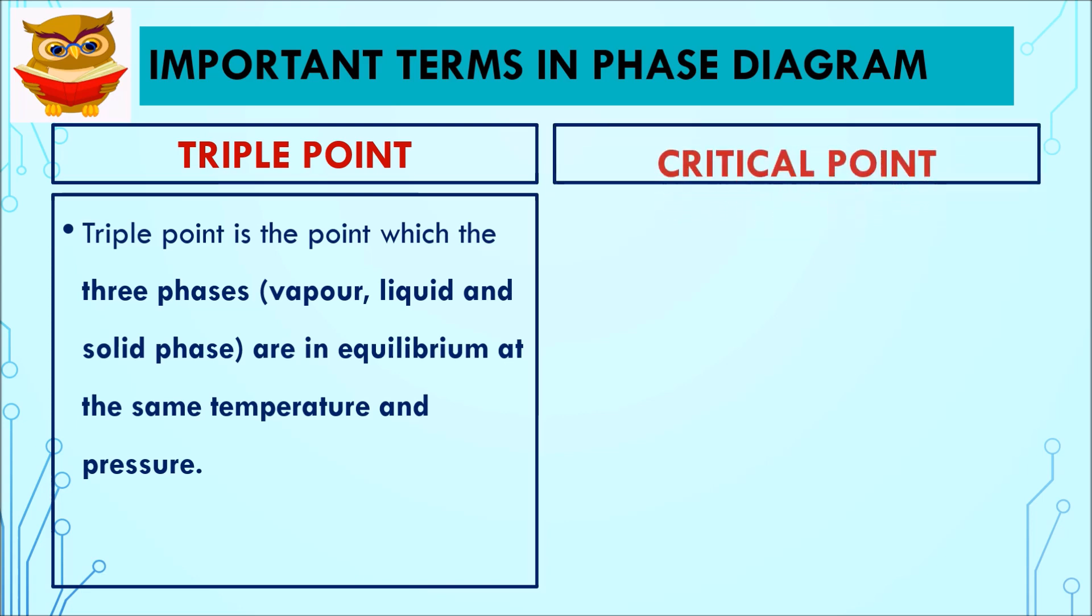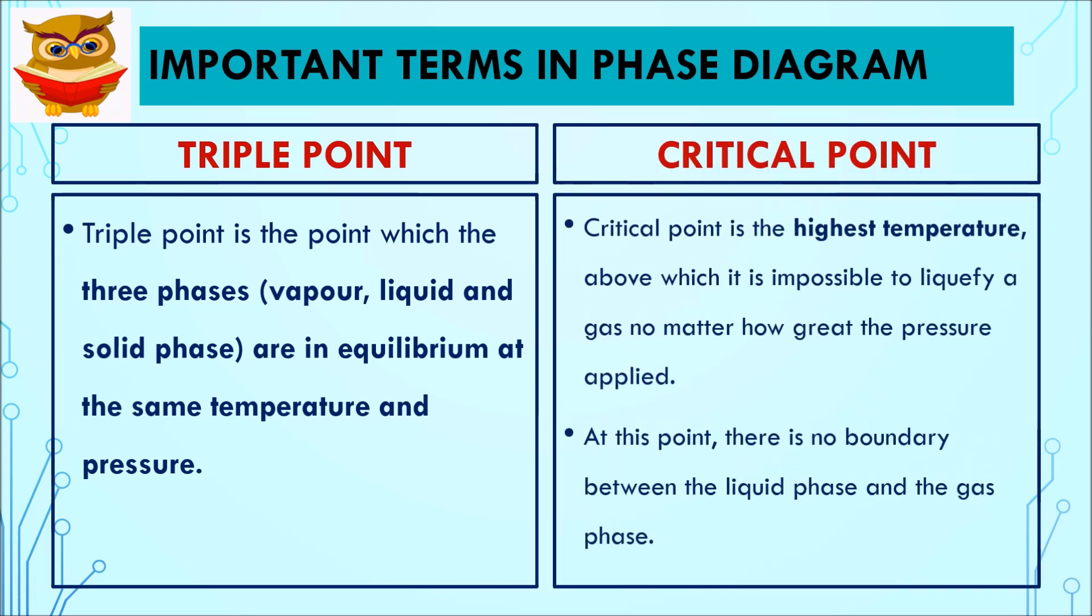Next, critical point. Critical point is the highest temperature above which it is impossible to liquefy a gas no matter how great the pressure applied. At this point, there is no boundary between the liquid phase and the gas phase.